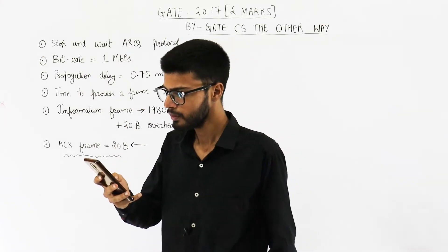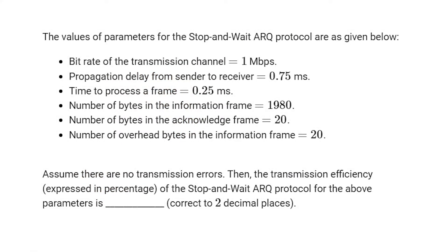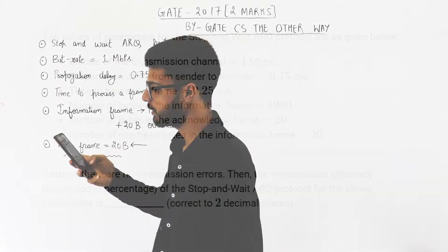They are saying the values of parameters for Stop and Wait ARQ protocol are as given below. Bit rate of transmission channel is 1 Mbps. Propagation delay from sender to receiver is 0.75 milliseconds. Processing delay is 0.25 milliseconds. Number of bytes in information frame is 1980. Number of bytes in acknowledgement frame is 20. Number of overhead bytes in information frame is 20. Assume that there are no transmission errors.